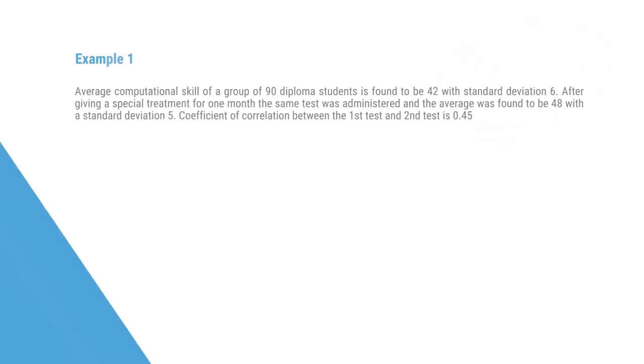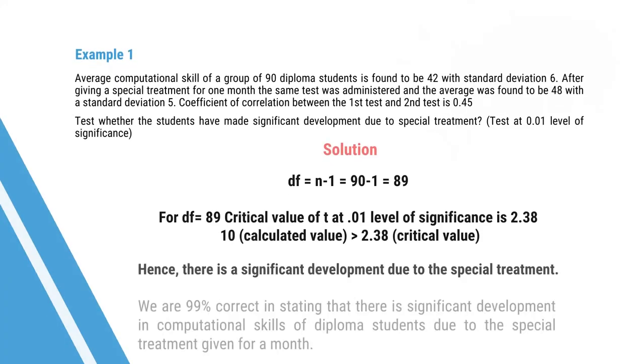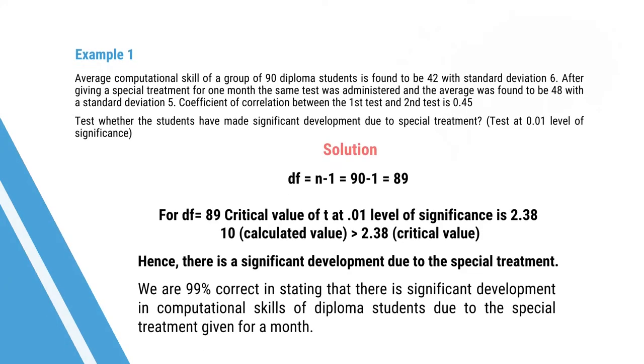The difference D between the two means is 48 − 42 = 6. So T = D / SED = 6 / 0.60 = 10. Our calculated value is 10. This is a one-tailed test, as the question tests whether students have made significant development due to treatment. The degree of freedom is N − 1 = 90 − 1 = 89.